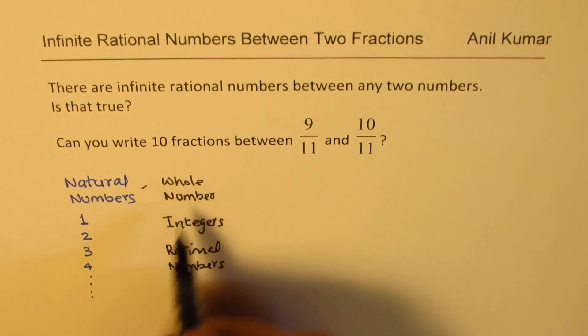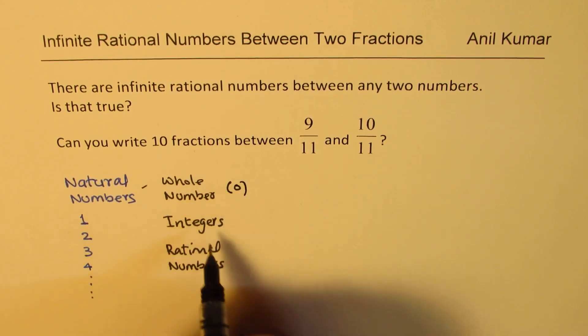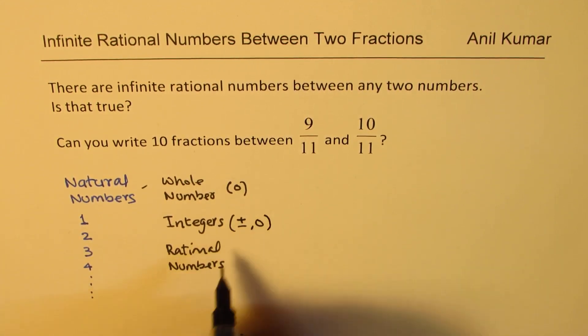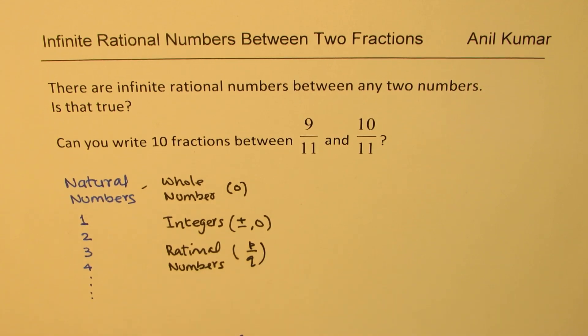Now, whole numbers include 0, integers include plus and minus and also 0, and the rational numbers are written as ratio of two numbers, let's say P over Q. So, we'll limit ourselves to rational numbers in this particular video since I have used the word rational number. So, most of our students are familiar with fractions.